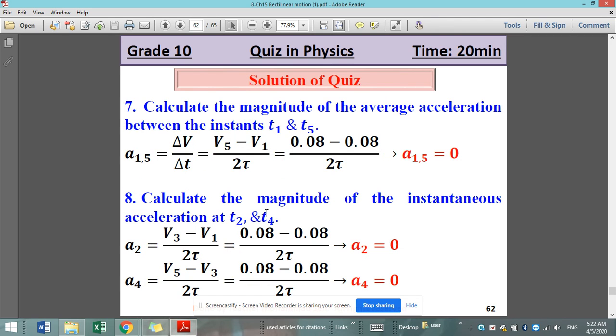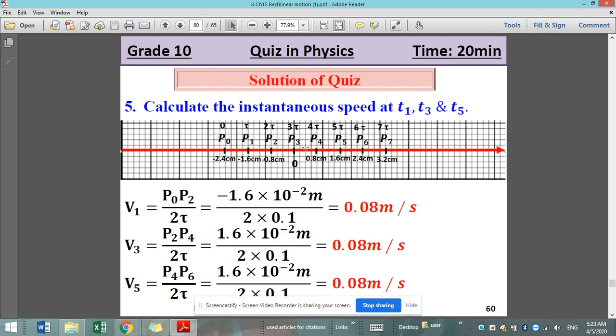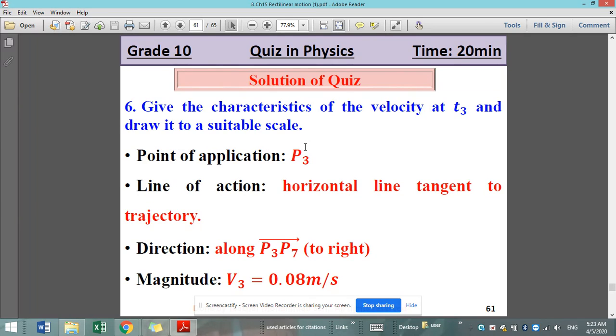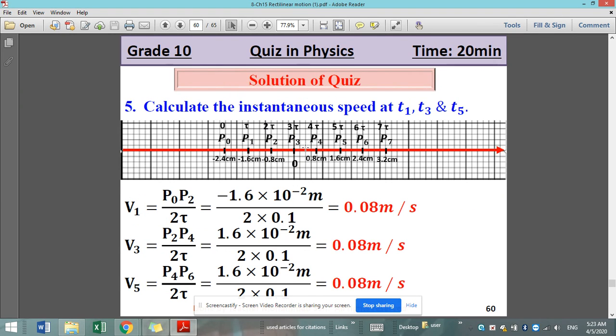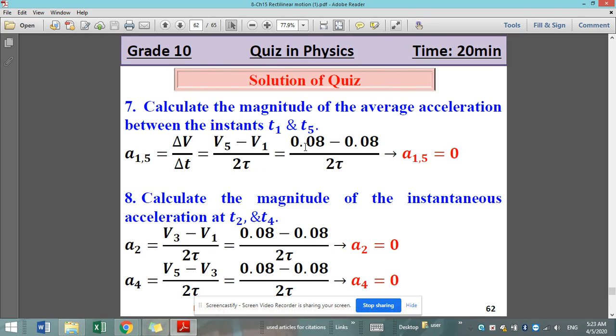Now for part 7, calculate the magnitude of the average acceleration between the instants T1 and T5. So average acceleration A1-5 is delta V over delta T. It is V5 minus V1 over 2 tau. It is equal to V5, already calculated in this part, and V1 is also calculated in this part. So it is V5 minus V1. They are equal. The acceleration is 0.